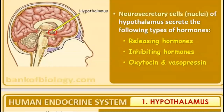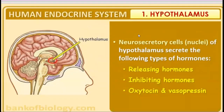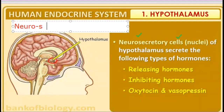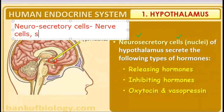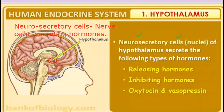Let's start with the hypothalamus. Hypothalamus is made up of neuro-secretory cells — nerve cells which secrete hormones. The hypothalamus releases three types of hormones: releasing hormones, which are required to release pituitary hormones; inhibiting hormones, which are required to inhibit the pituitary; and oxytocin and vasopressin. These hormones are released by the hypothalamus but stored in the posterior pituitary.